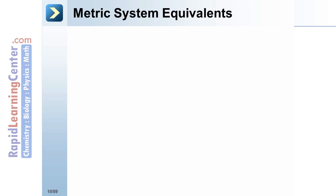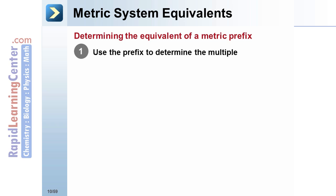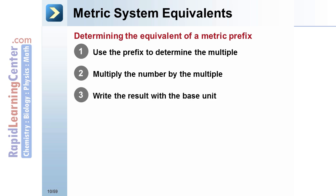Metric system equivalence: Determining the equivalent of a metric prefix. Step one: Use the prefix to determine the multiple or power of 10. Step two: Multiply the number by that multiple. Step three: Write the result with the base unit. For example...